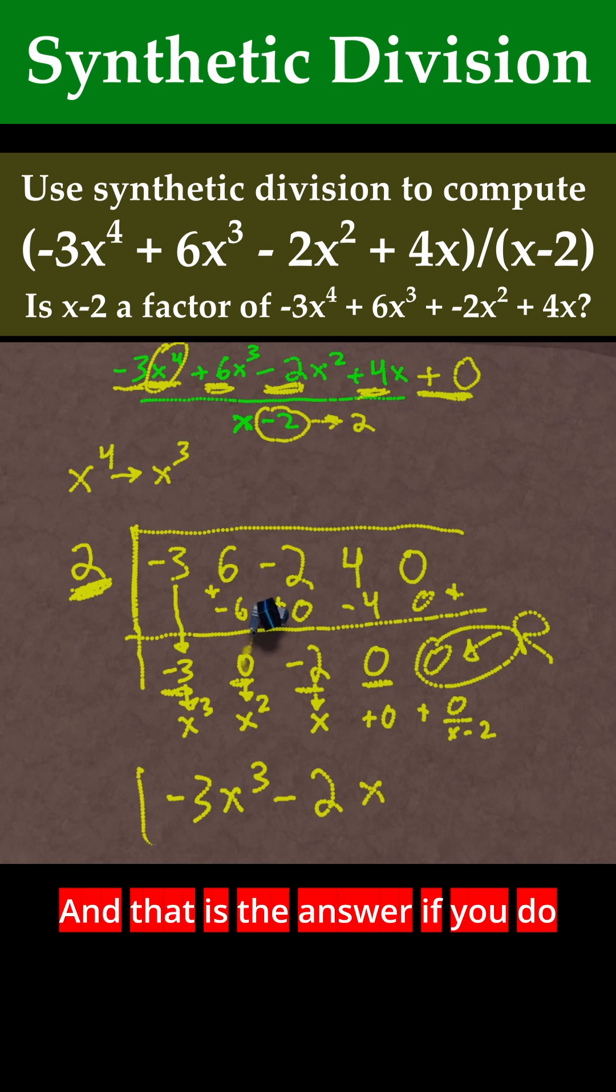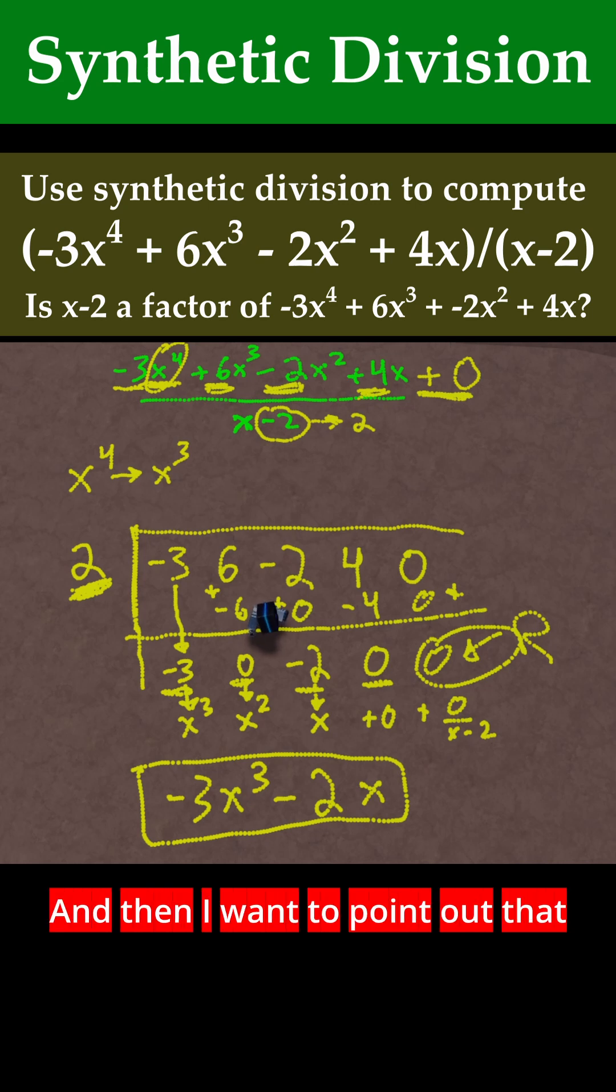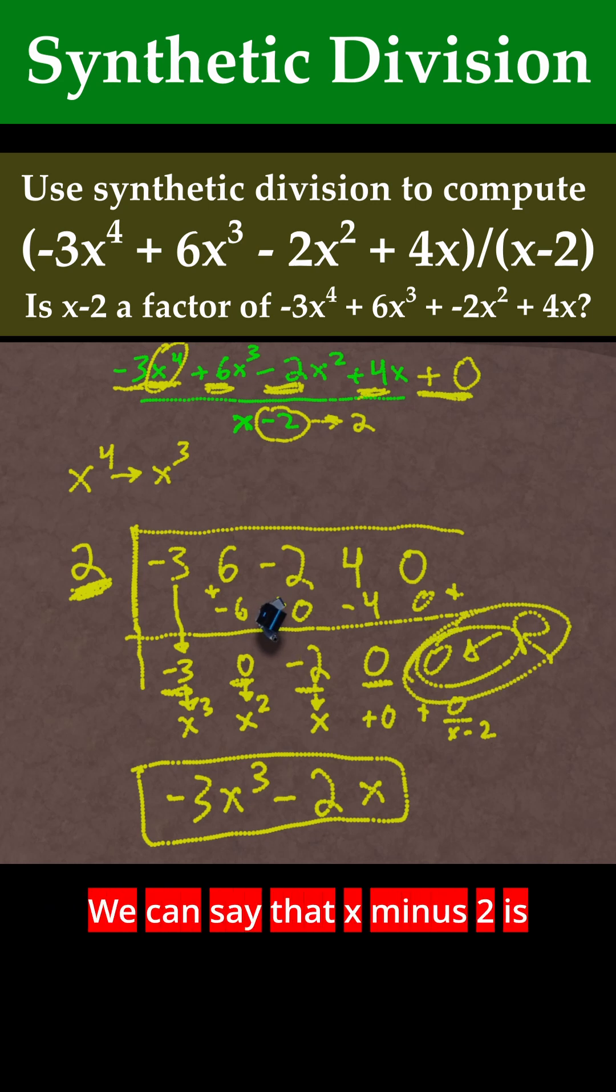And that is the answer if you do -3x^4 + 6x^3 - 2x^2 + 4x divided by x - 2. And then I want to point out that because the remainder is 0, we can say that x - 2 is indeed a factor of -3x^4 + 6x^3 - 2x^2 + 4x.